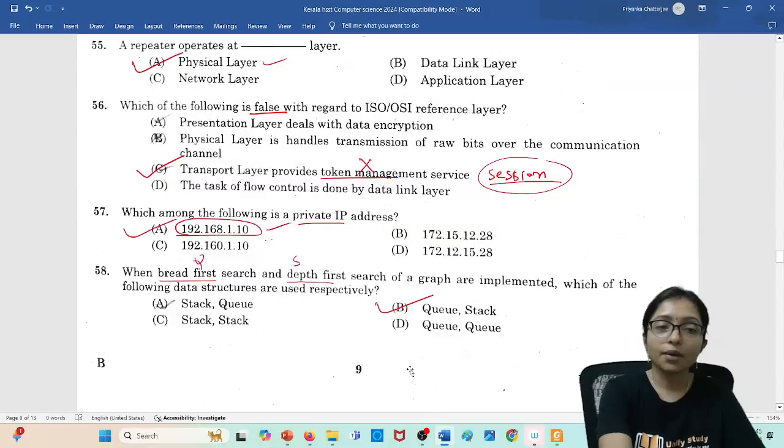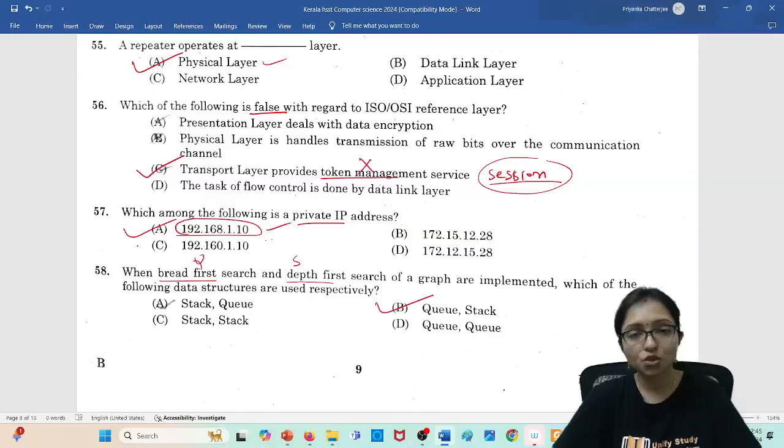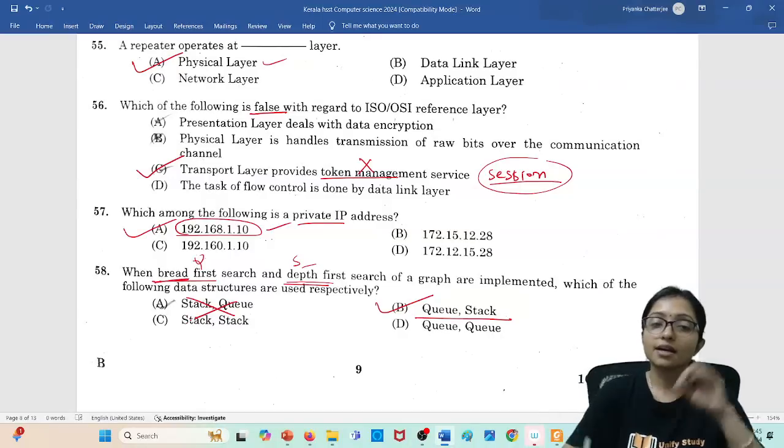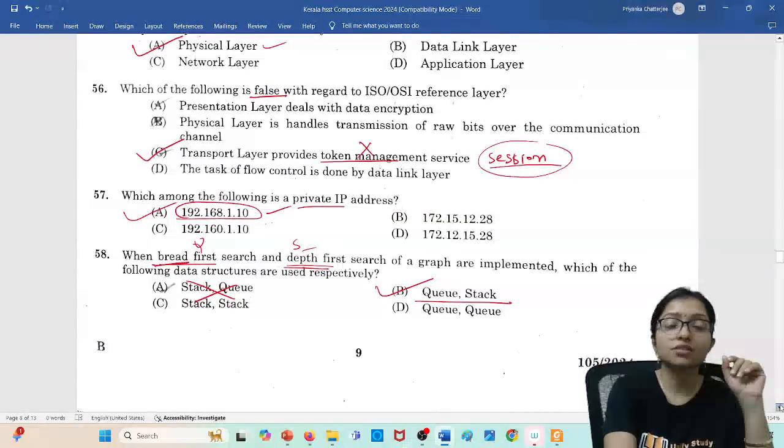When the breadth first, actually it should be breadth first, the spelling mistake is a little bit there. So first breadth first, then depth first. Breadth first is using queue, depth first is using stack. So your answer should be queue and stack, not stack and queue. Sometimes after knowing the question also, sequence is very important. That's why most of the time students are doing mistakes.